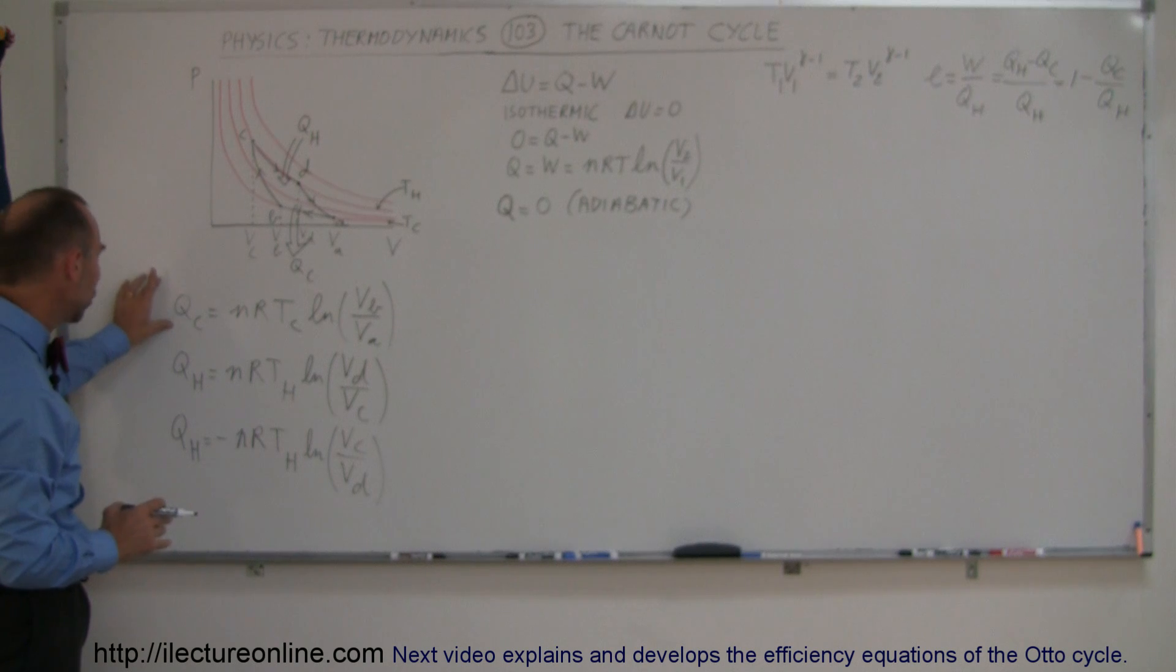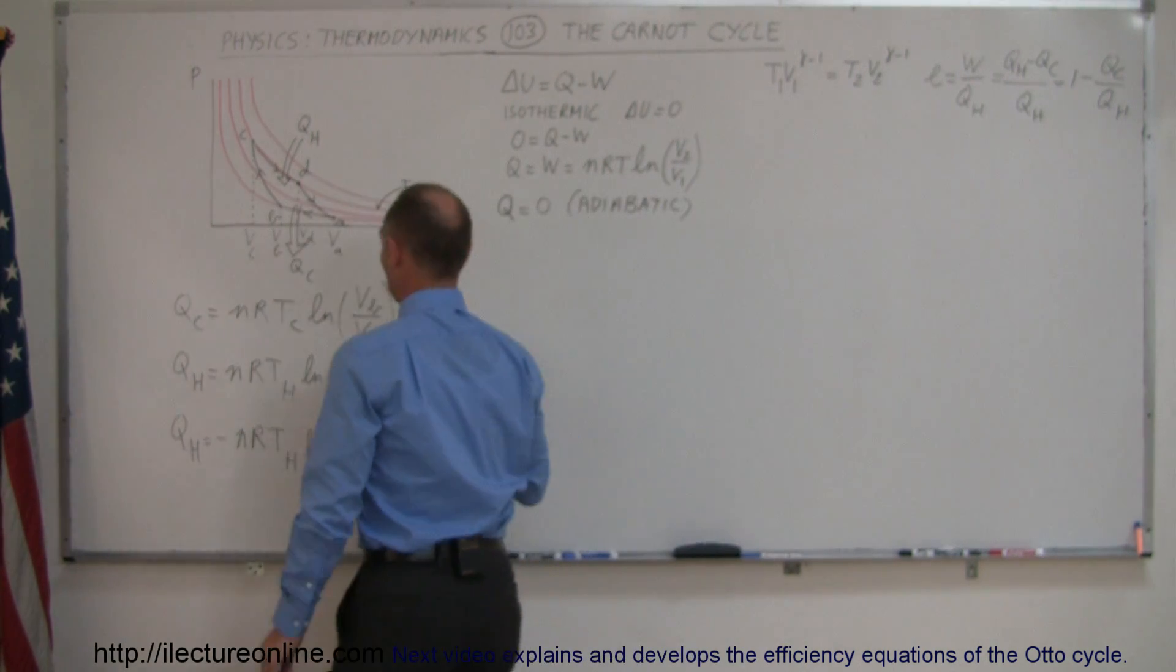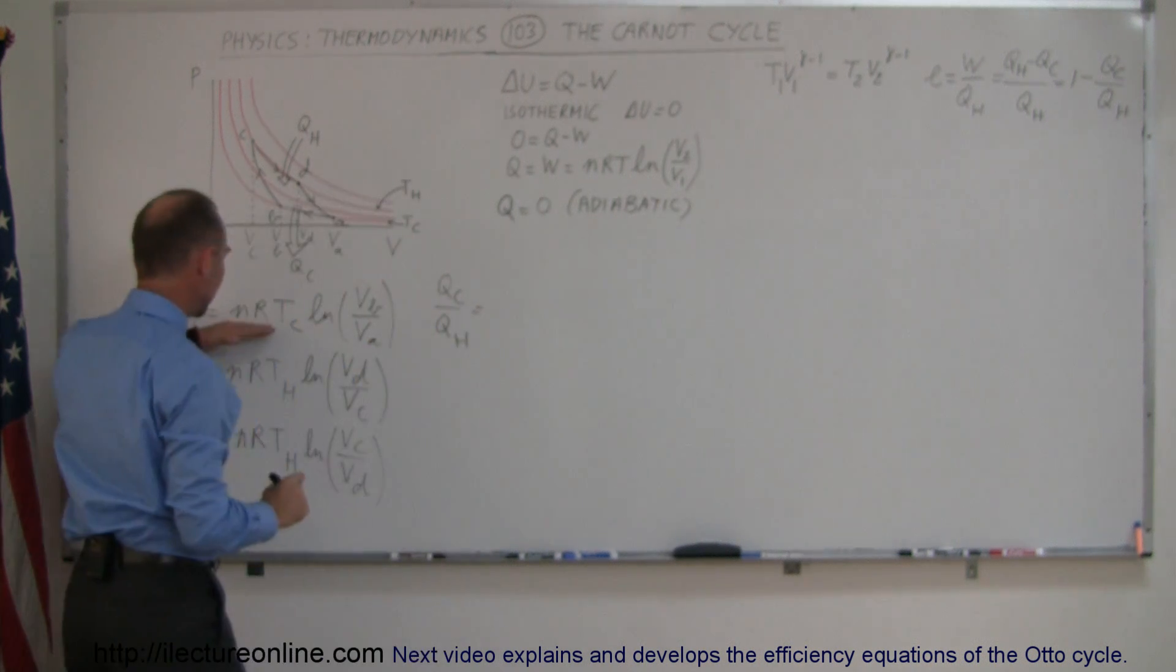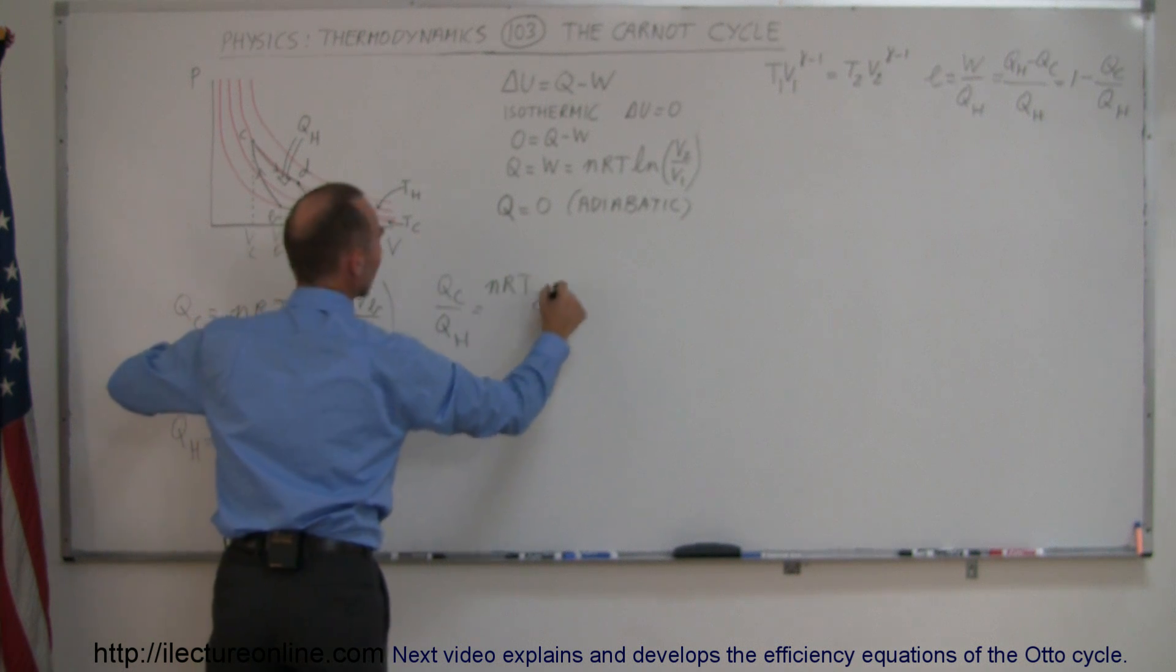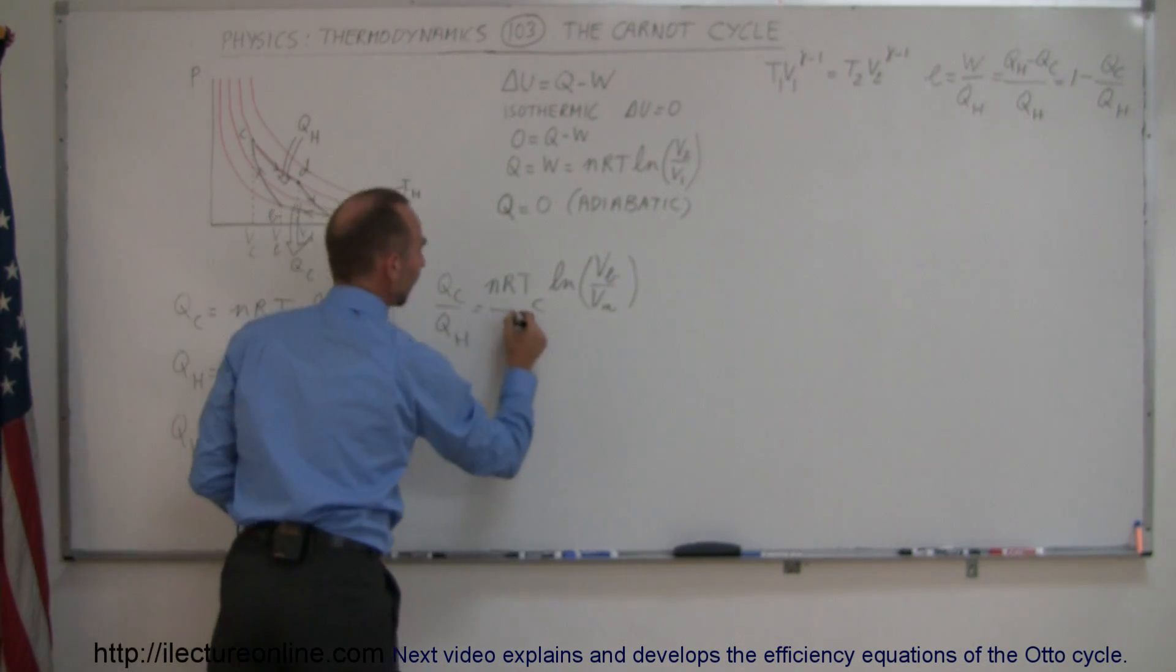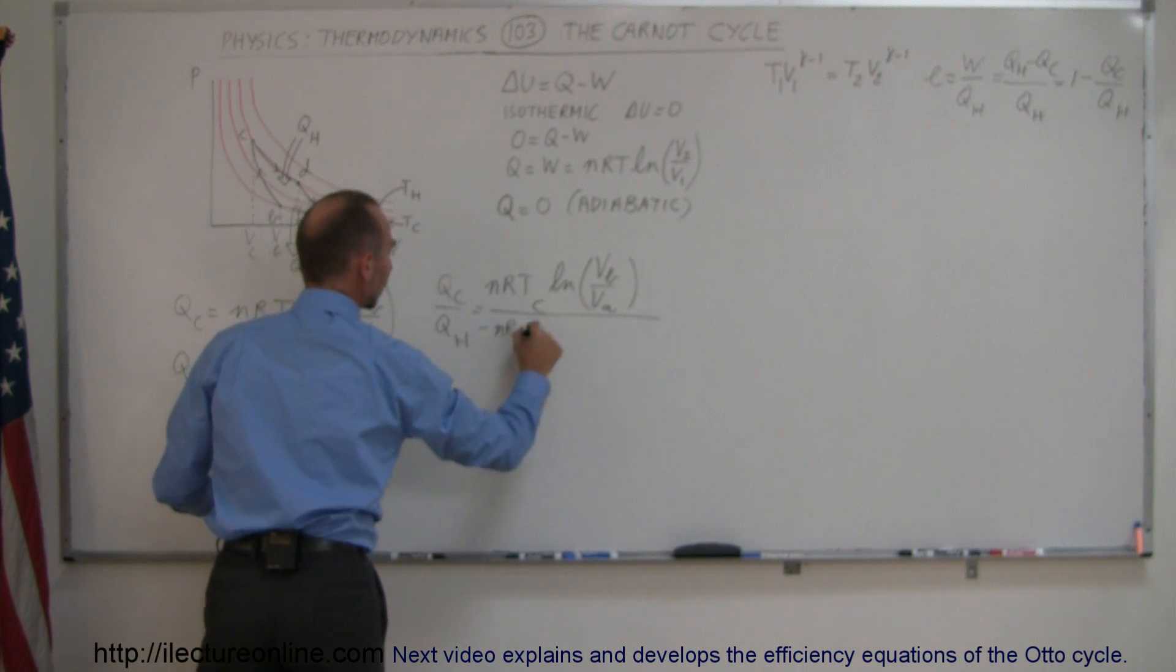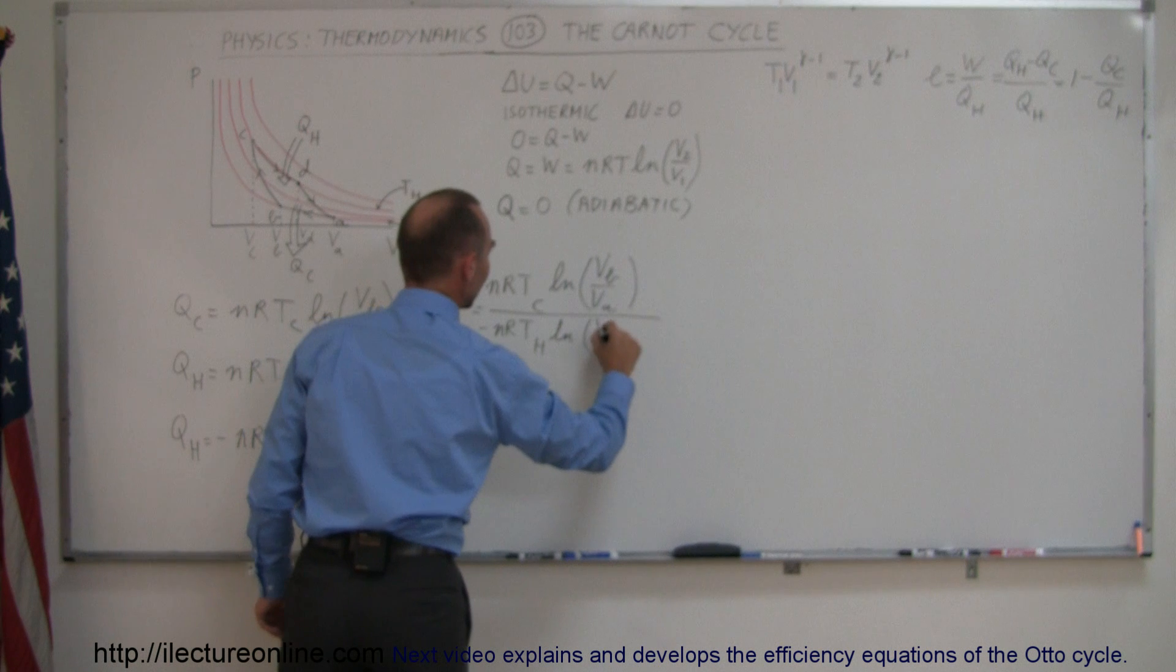So, Q_cold divided by Q_H can now be written as this right here, which is nRT_cold times the natural log of V_B over V_A, divided by the negative of nRT_H times the natural log of V_C over V_D.